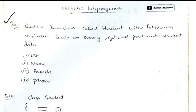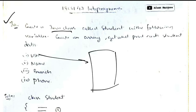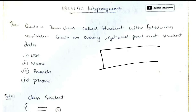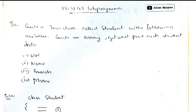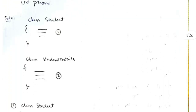The first program, 1a, is to create a Java class called Student. The Student will have four variables: USN, name, branch, and phone number. After that, we have to create an array of such objects and take the input for each student - their USN, name, branch, and phone number - and finally display this array. We'll be using two classes: class Student and class StudentDetails.